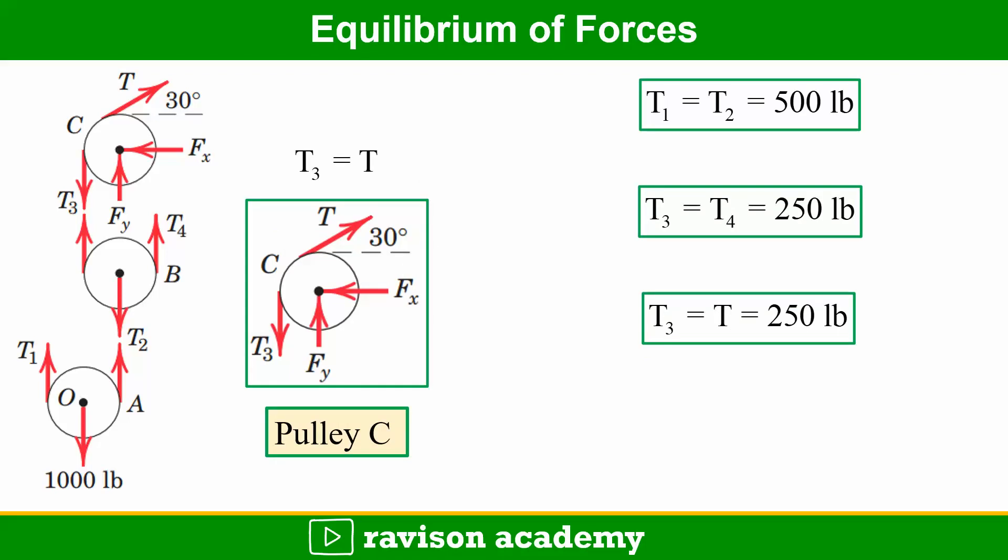For pulley C, the free body diagram is drawn. We already know T1 and T2 are equal, that is 500 pounds, and T3 and T4 is equal to 250 pounds. Here T3 is equal to T, that is 250 pounds.